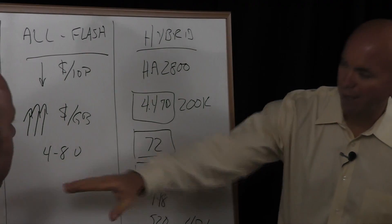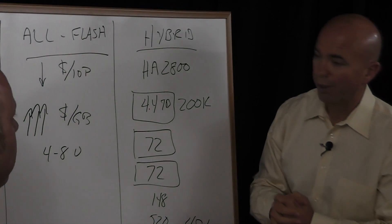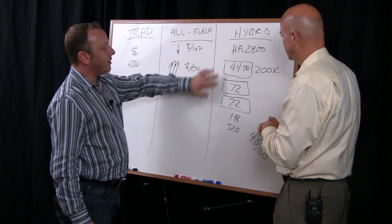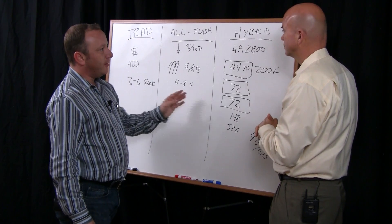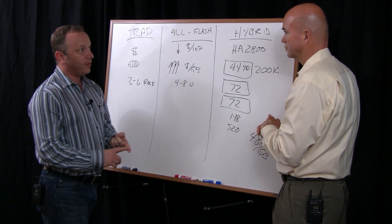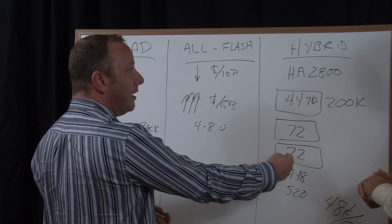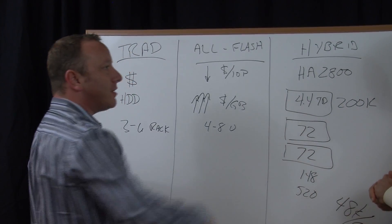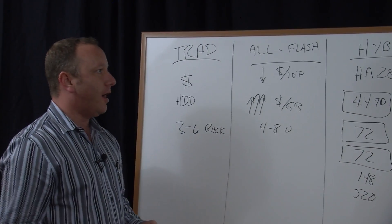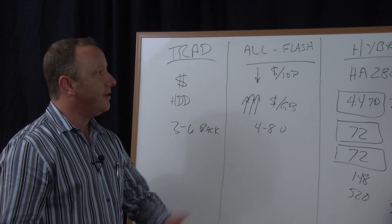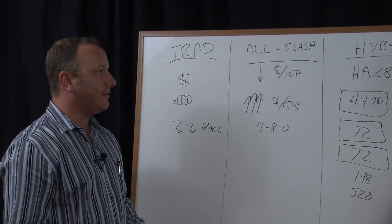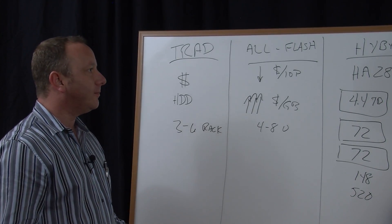Whereas here our caching algorithms will resolve all of that. So you can either use our application aware provisioning, enforce files that don't need the speed down here or let the caching software figure it out on its own. It'll just dump it down to disk because it's not being accessed that often.